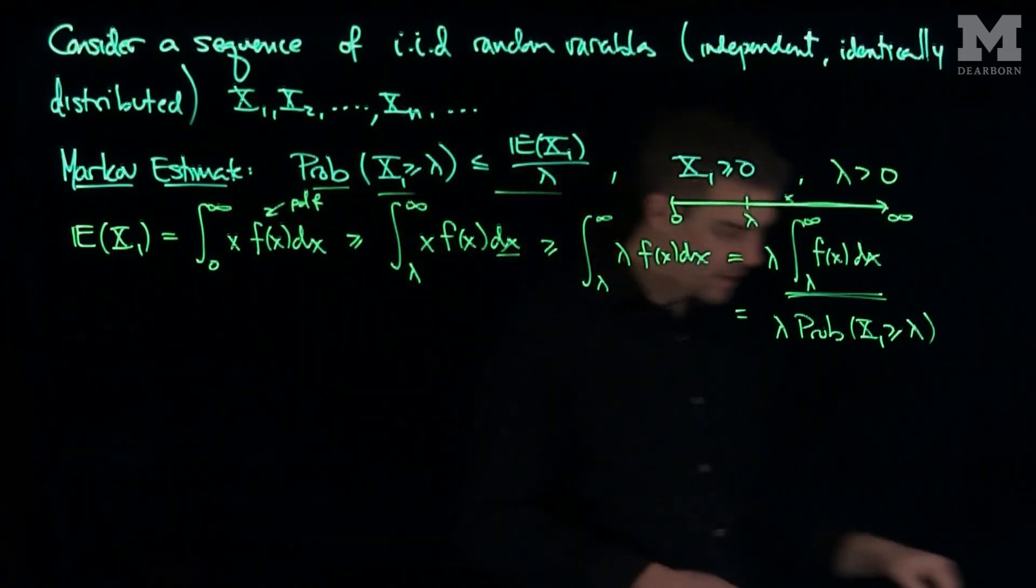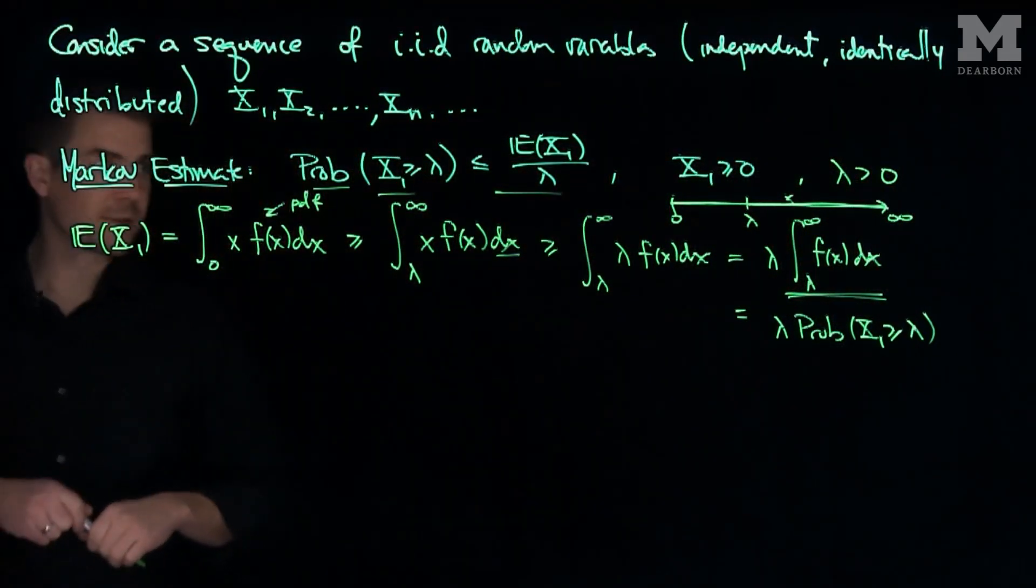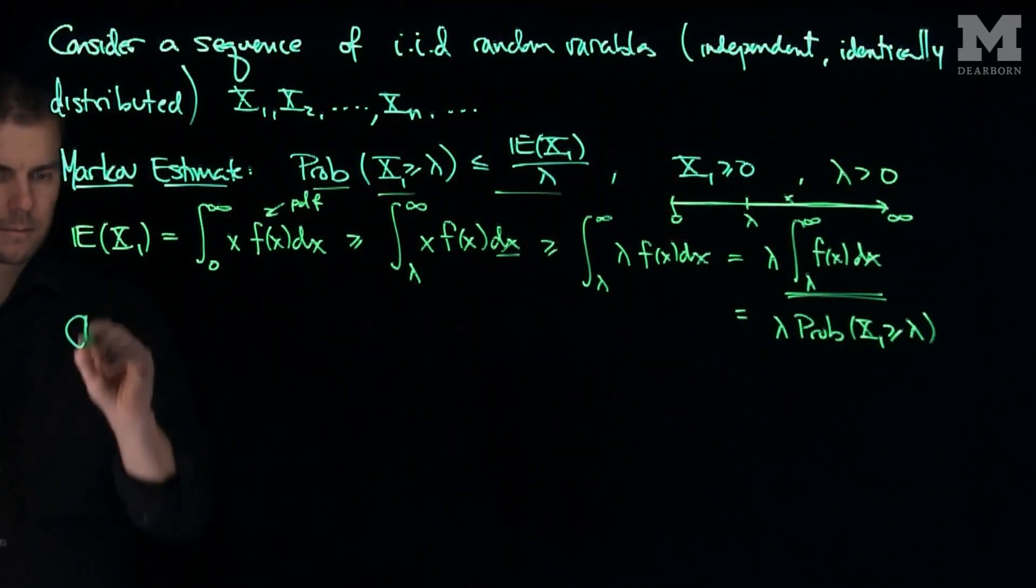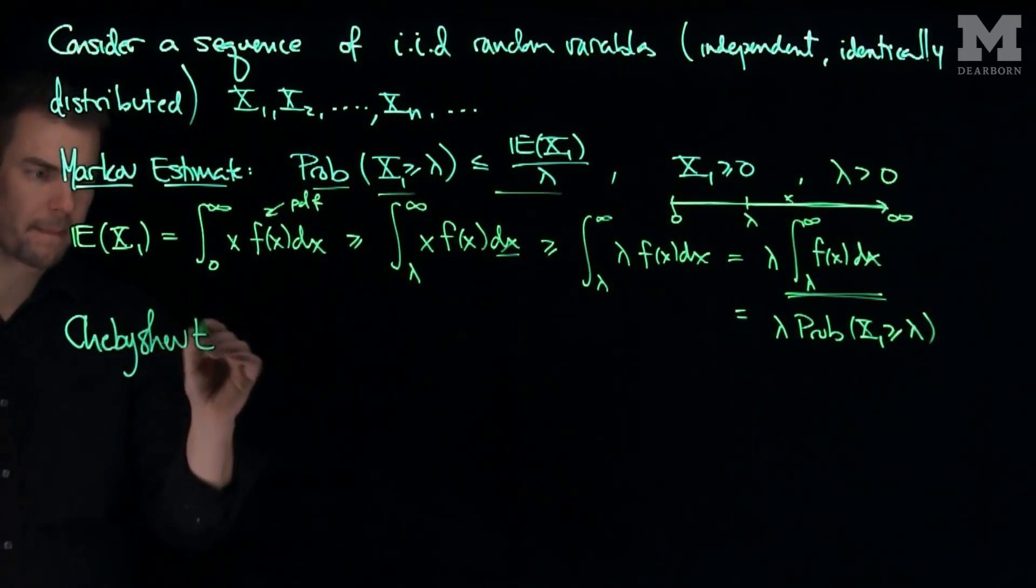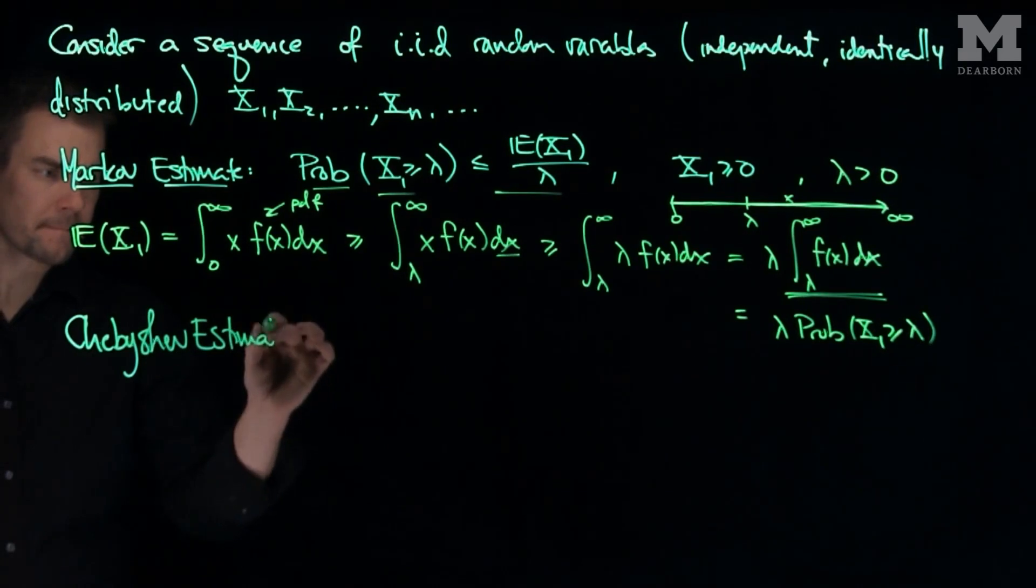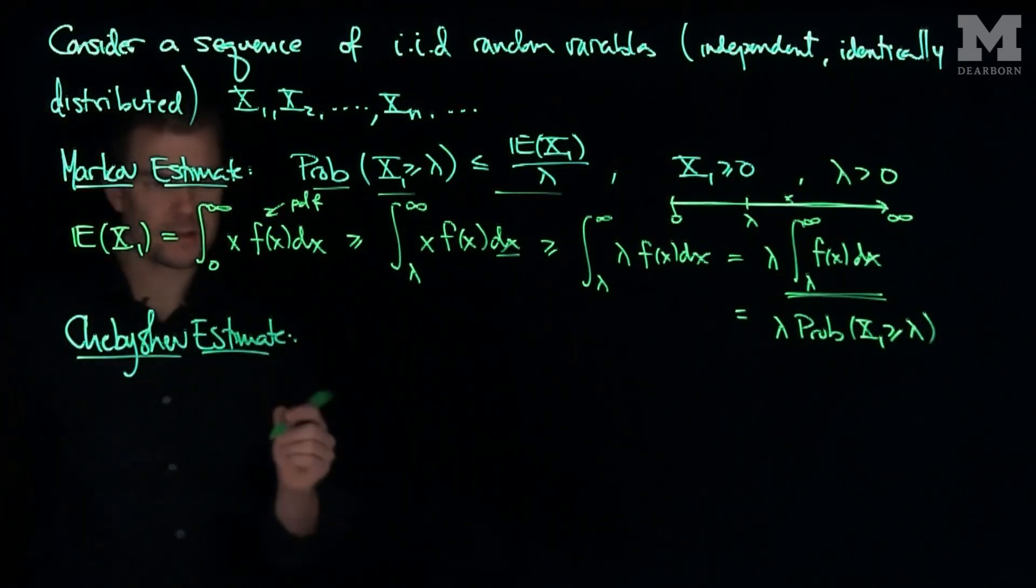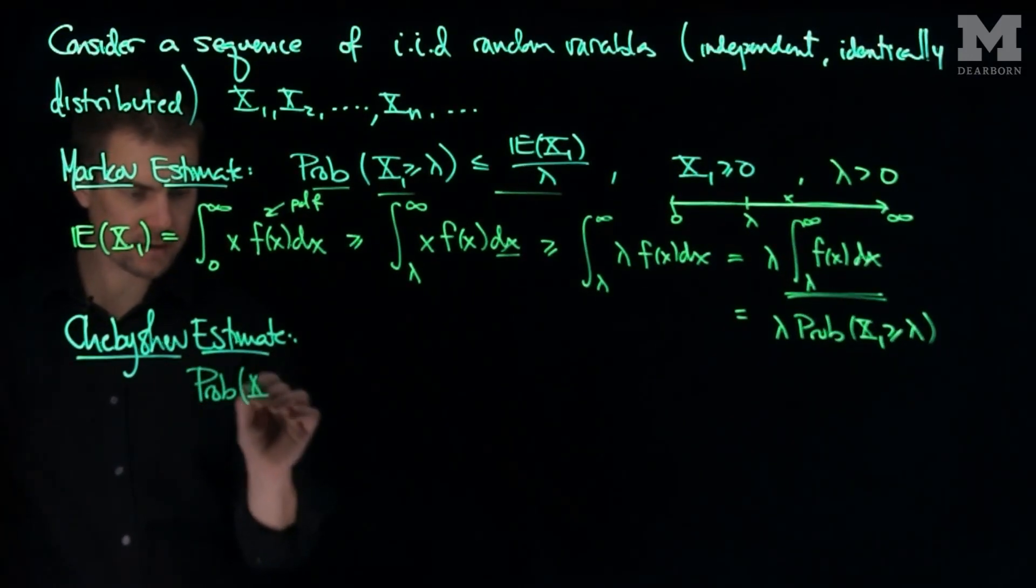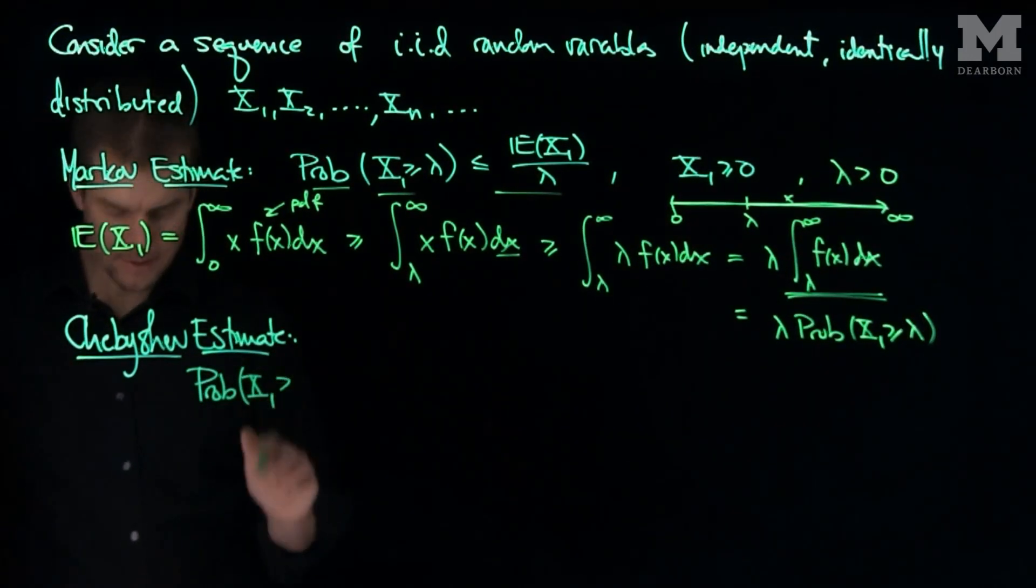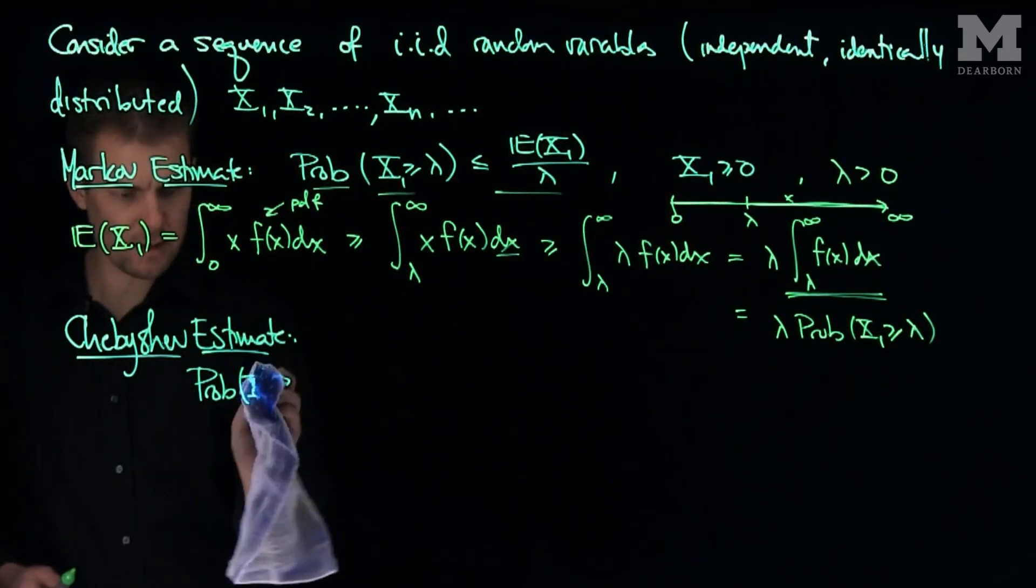So the Markov estimate is very useful because it gives rise to several other important estimates. The second estimate we'll discuss is the Chebyshev estimate. What the Chebyshev estimate says is the following: the probability that X1 minus its mean in absolute value.